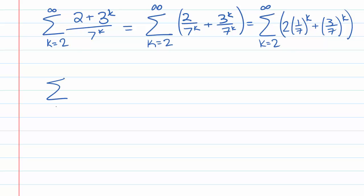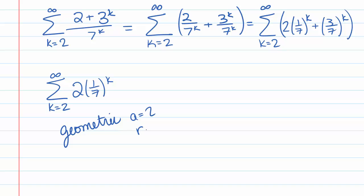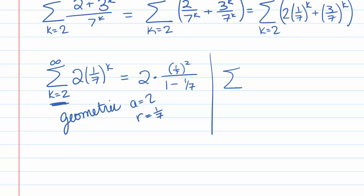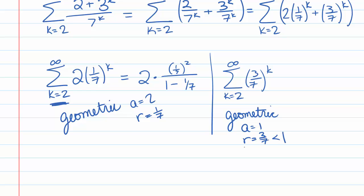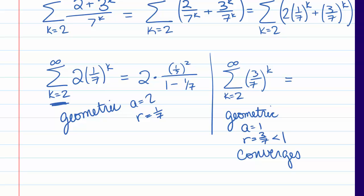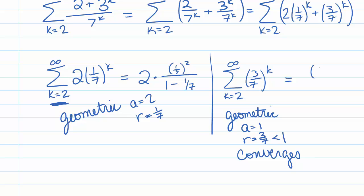We can look at each series individually. The sum k equals 2 to infinity of 2 times (1/7) to the k is geometric with a equals 2, r equals 1/7, starting at k=2. So it sums to 2 times r squared over 1 minus r, giving 2 times (1/7) squared over 1 minus 1/7. Then the sum k goes from 2 to infinity of (3/7) to the k is geometric with a equals 1, r equals 3/7, which is less than 1, so it converges to (3/7) squared over 1 minus 3/7.